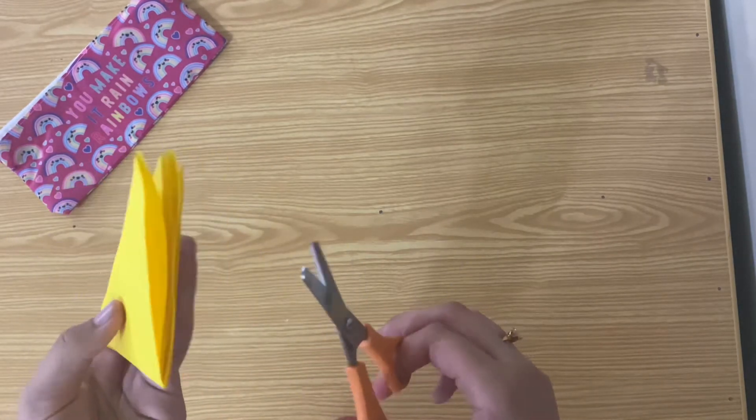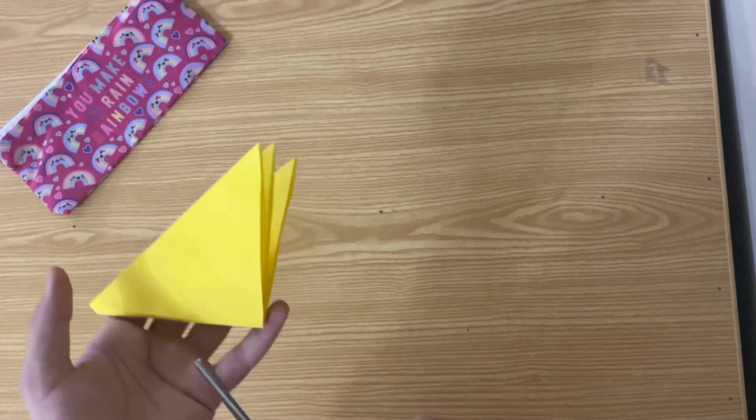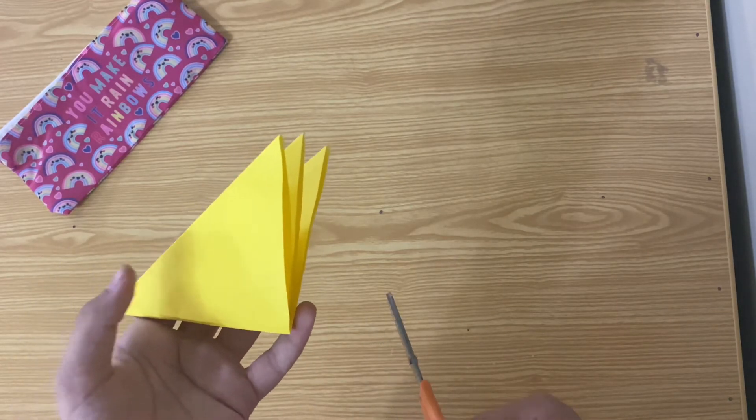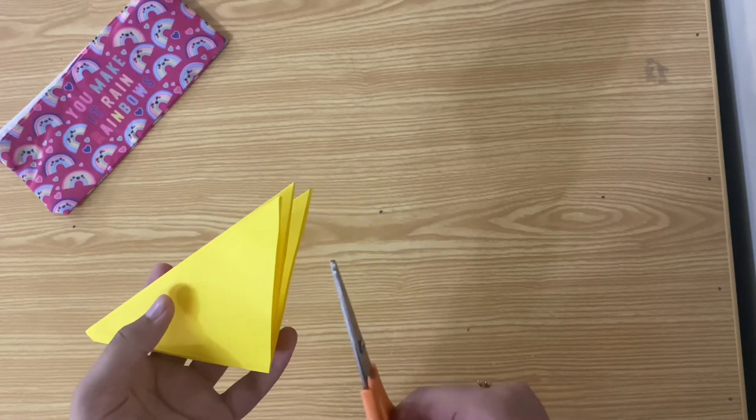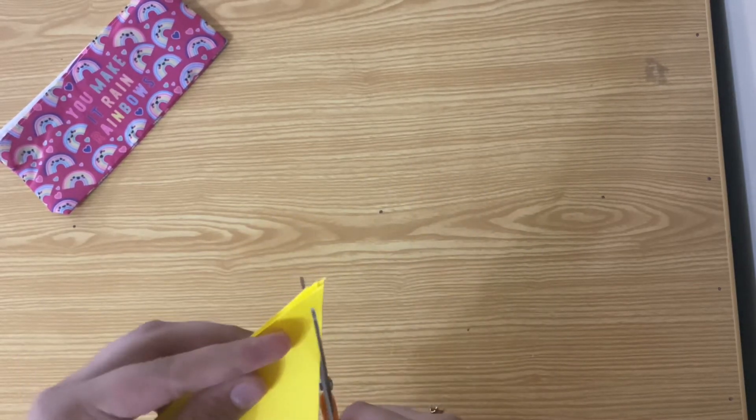Then take your scissors. These are basically going to be the butterfly wings, and butterfly wings aren't pointy, so we're going to make them more like a butterfly wing, shaping it out this way.